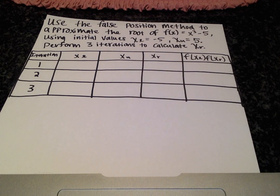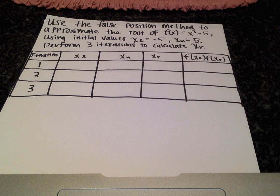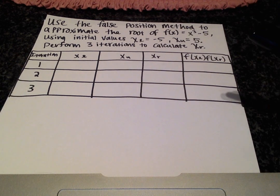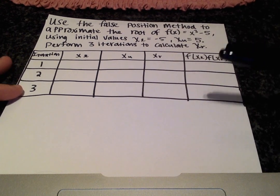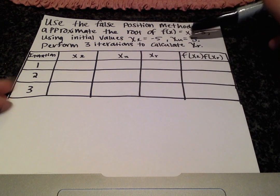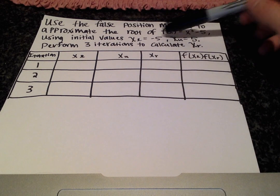Hey, what's up. This is a continuation of the last video where I talked about the false position method and introduced it. In this video, I wanted to actually do a concrete example and go through the procedure. So we want to approximate the root of f of x equals x cubed minus 5, and we're told that x-lower equals negative 5 and x-upper equals 5, so that's our range.